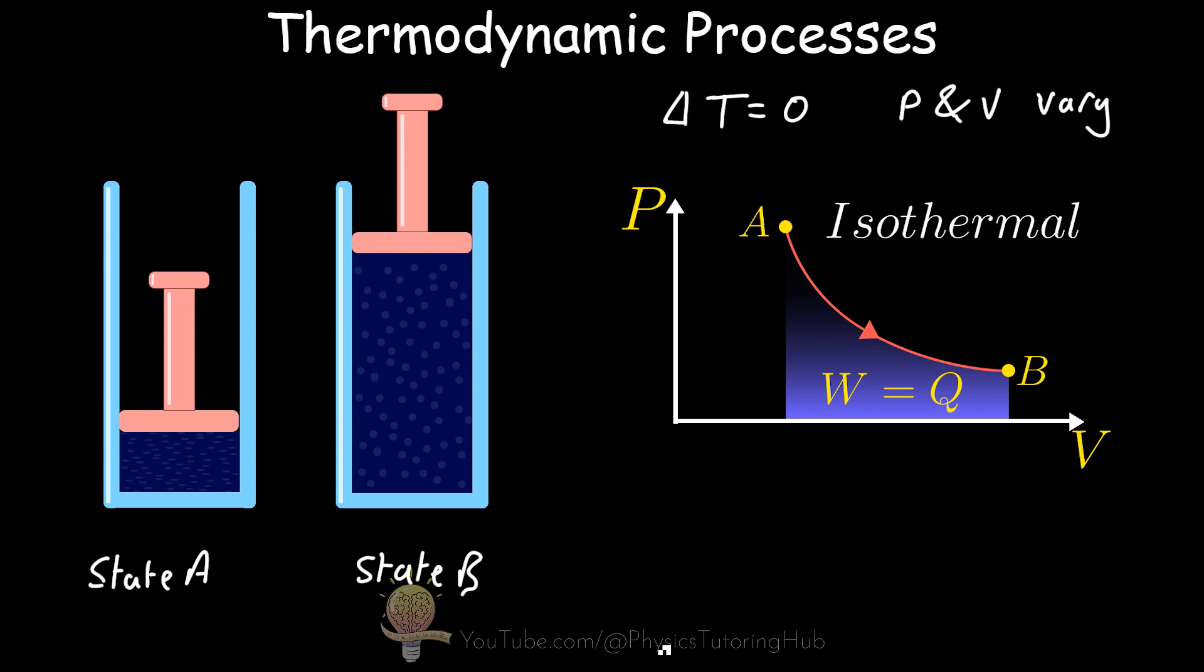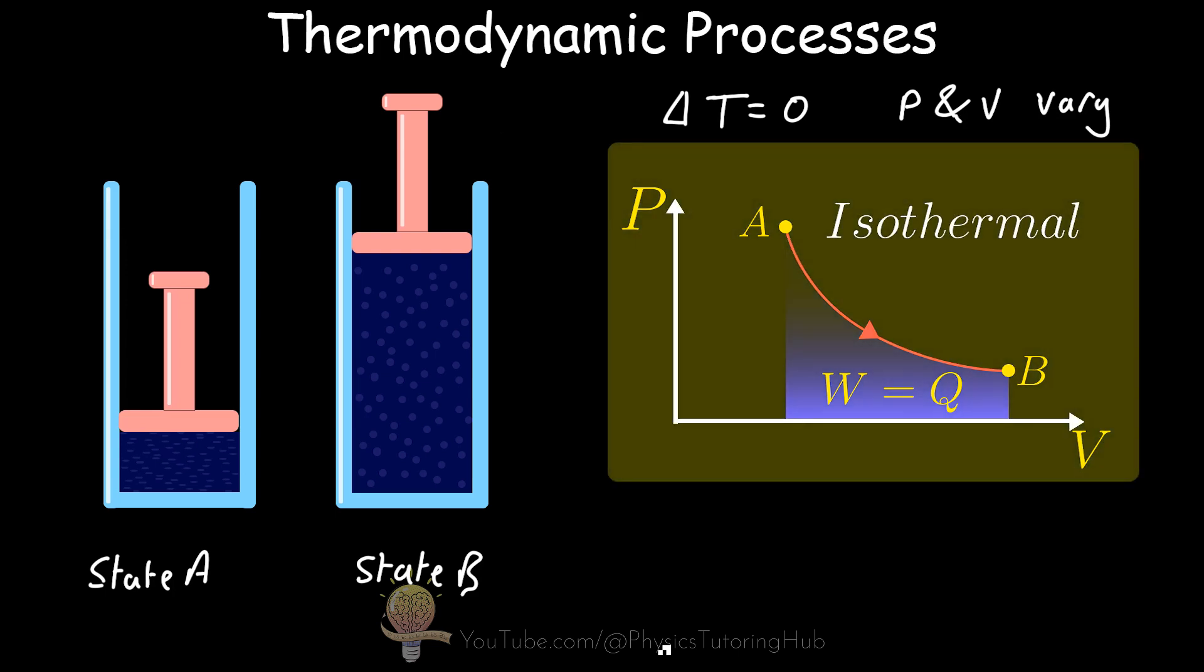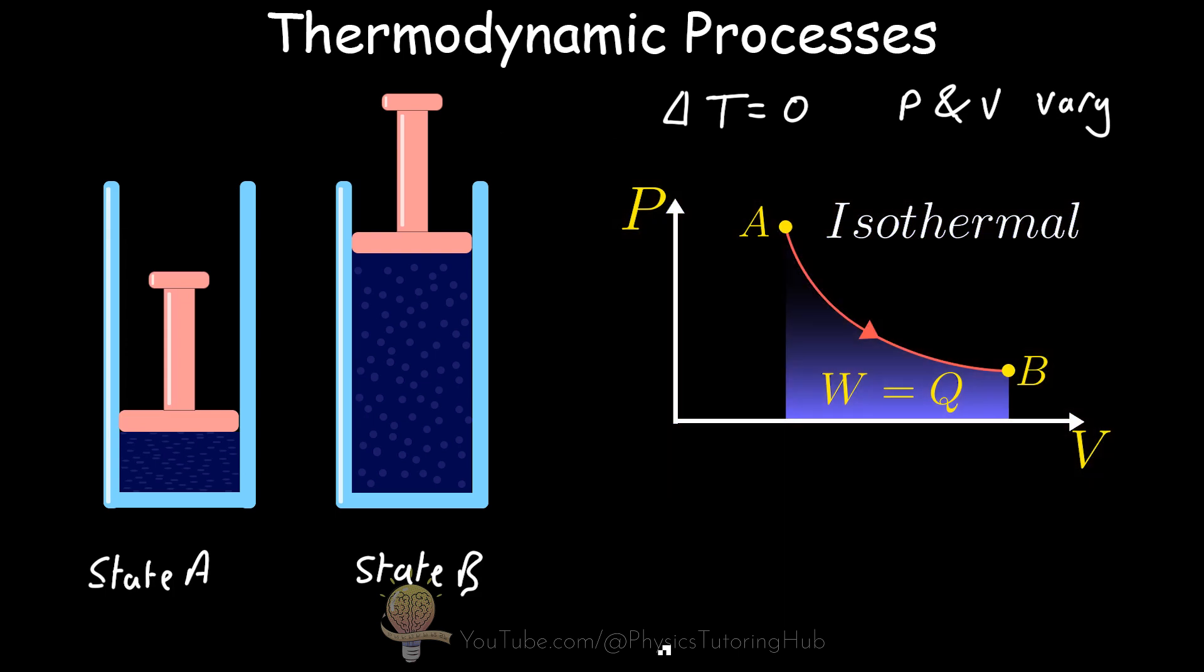When we draw a PV diagram of this process, we get something that looks like this, where going from state A to state B means that the system is increasing in volume and doing work on the surroundings. Also note that the pressure has also dropped from state A to state B.